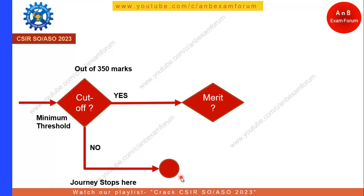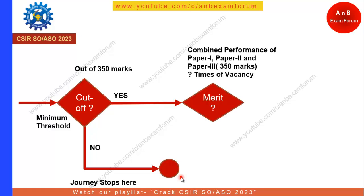If you are able to clear the cutoff, there will be a merit list. The merit list will be based on the combined performance of Paper 1 and Paper 2 — note: it is Paper 2, not Paper 3; that was a typing mistake on screen, please correct it. The combined total is 350 marks. How many candidates they will call has not been clearly mentioned in the advertisement; we will try to put in an RTI for that. The merit will be based on Paper 1 and Paper 2, out of 350.